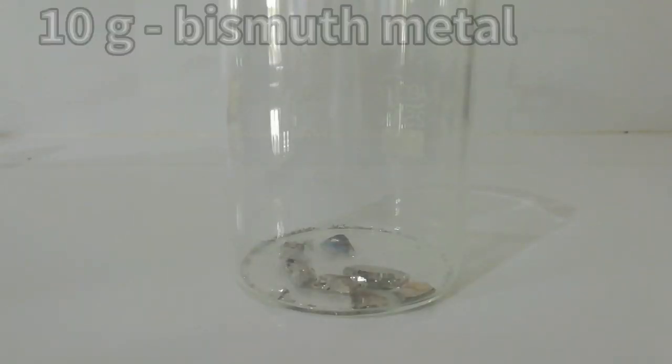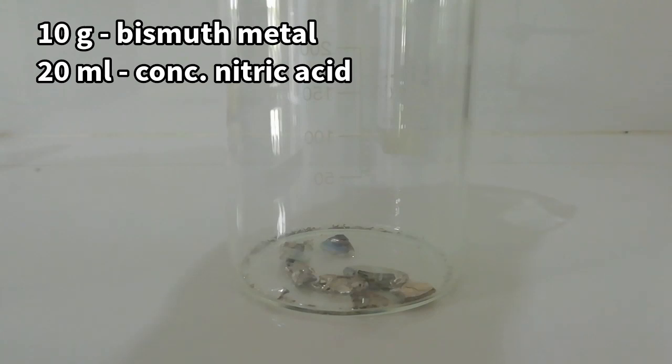First, 10 grams of bismuth metal was placed in a 200 milliliter beaker. Then 20 milliliters of concentrated nitric acid was added.